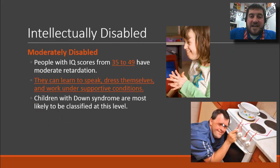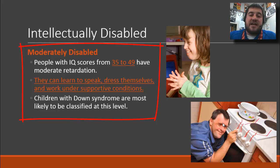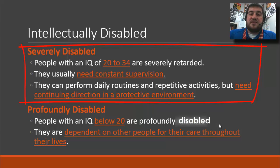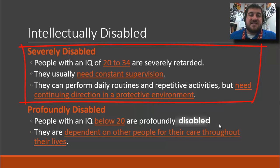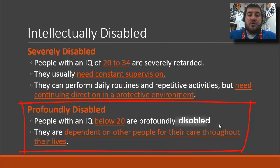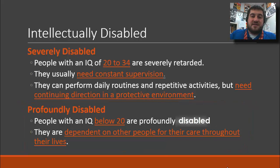Moderately disabled individuals have IQ scores from 35 to 49. They can learn to speak, dress themselves, and work under supportive conditions. Children with Down syndrome are typically classified at this level, and adults with Down syndrome are more than likely in the moderately disabled range. Severely disabled individuals, with IQs of 20 to 34, need constant supervision and can perform repetitive routines but require a protective environment. Finally, the profoundly disabled have an IQ at 20 or below and are dependent on other people for care throughout their entire lives.